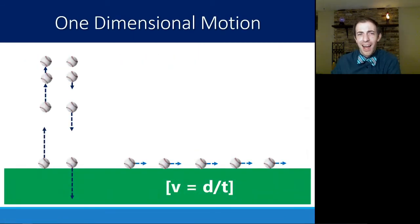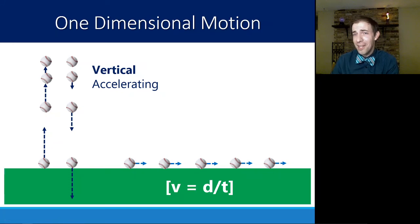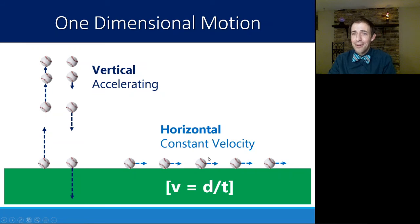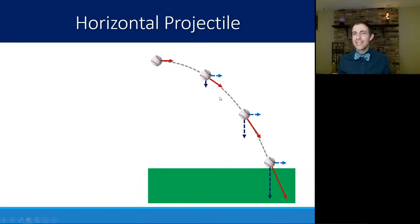So as a reminder, one dimensional motion has a couple different possibilities. We could have an object like throw a baseball up in the air and it slows down until it gets to the top. Or you could drop a baseball and it speeds up until it gets to the bottom. Or you could just roll a baseball on the ground and it's moving constantly the entire time. We would describe that motion as velocity is just distance over time. We have this idea of vertical because of gravity is always accelerating. It's either getting slower or it's getting faster. And horizontally, we say that it always has a constant velocity. If we combine these types of motion, that's how we get this projectile.